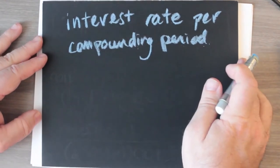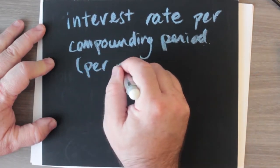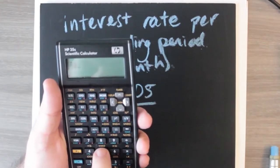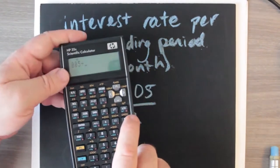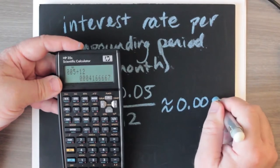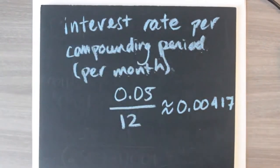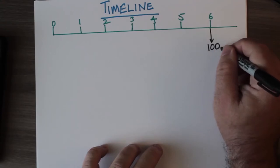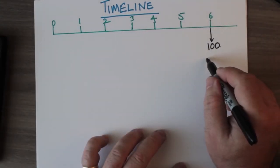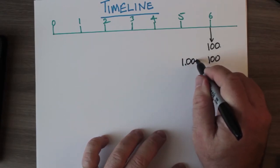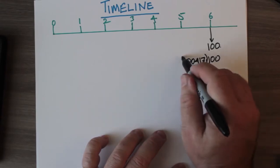We find the interest rate per compounding period, which means per month. We're given five percent per year, so we divide by 12: 0.05 divided by 12 gives approximately 0.00417. When computing interest we need to add one to this decimal — similar to computing sales tax — which has the effect of calculating the interest and adding it back to the principal amount.